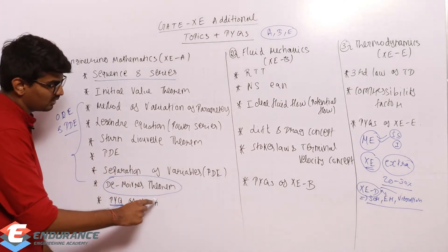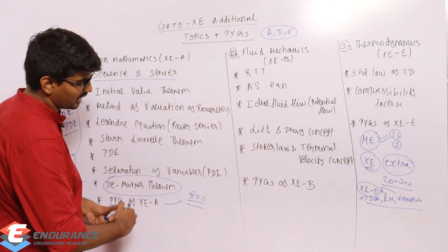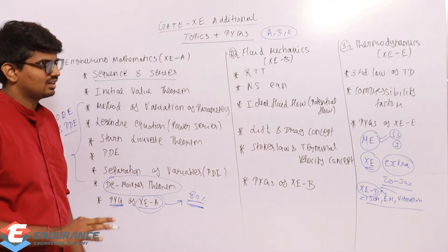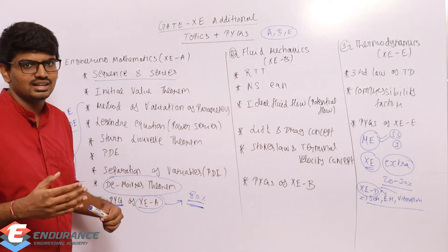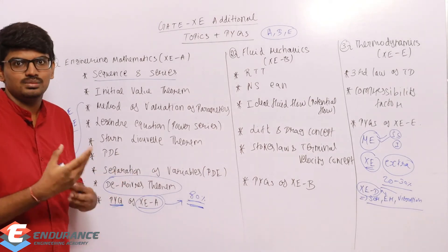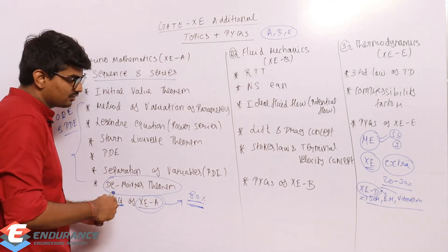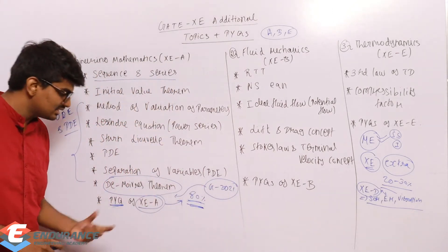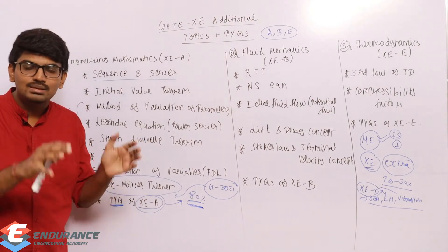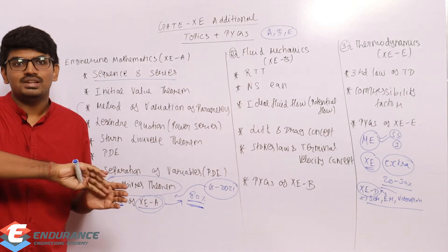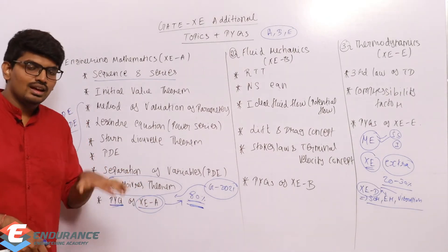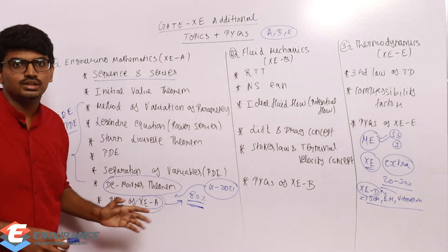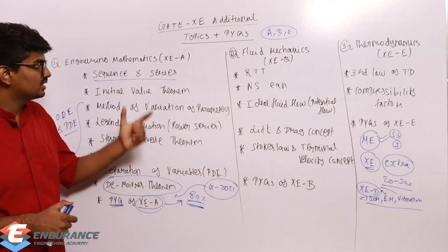For previous year questions, we have solved around 80% of previous year questions of XEA. We are not repeating easy repetitive questions, so only non-repetitive questions are solved. GATE 2021 questions are yet to be solved and will be added. This covers around 80% of previous year questions from the last 15 years of question papers — all solved and included in the course in one place, corresponding to the additional mathematics topics.